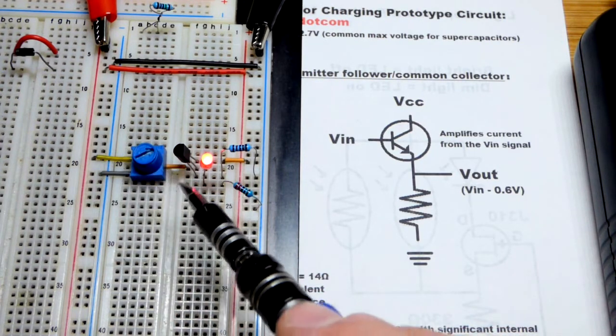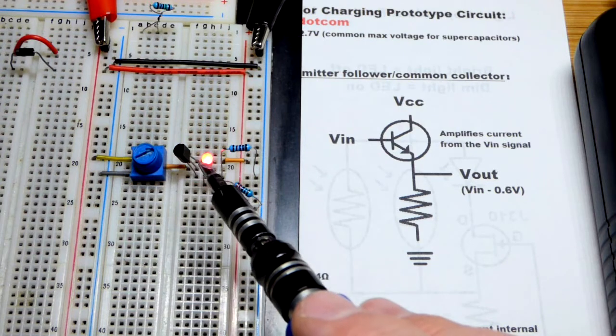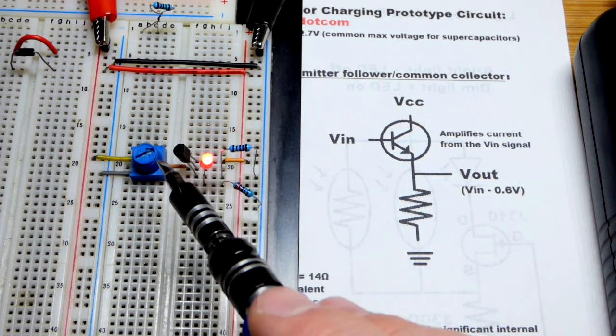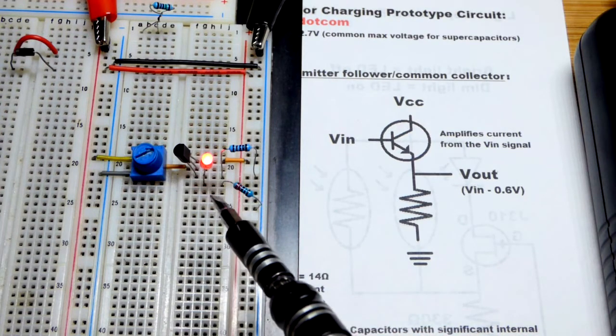Now if you attach an LED though after you set the voltage in this case, that's going to throw the voltage off because it needs more current than the trim pot can provide to hold that voltage.